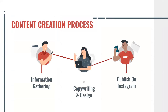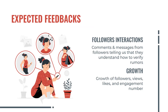Here's our content creation process. For step one, we tried to gather as much information as we could. In step two, we made a copyright and the design of the post. Lastly, we uploaded it on the Instagram page. The engagement we expected was users commenting and messaging us, telling us whether they understand how to verify rumors. Growth was tracked through the increase in followers.